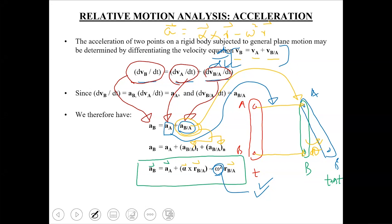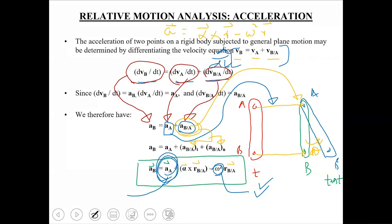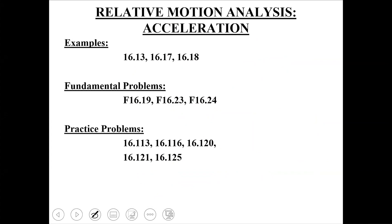So we will do examples where omega is known, starting directly with acceleration analysis, and where omega is not known, we first do velocity analysis to find omega, then apply the acceleration equation. Always make the point where acceleration is known your base point, and with that as reference, write the acceleration of the other point.